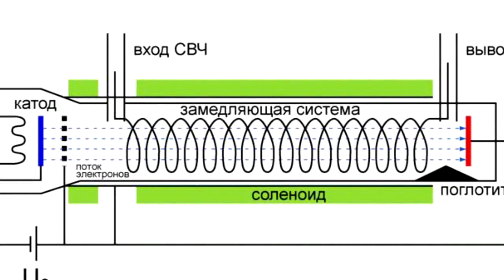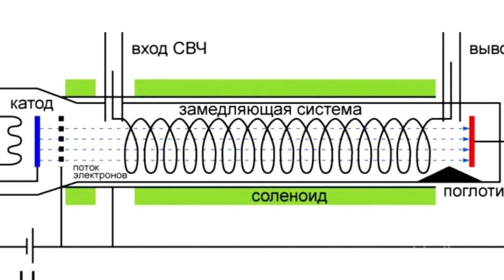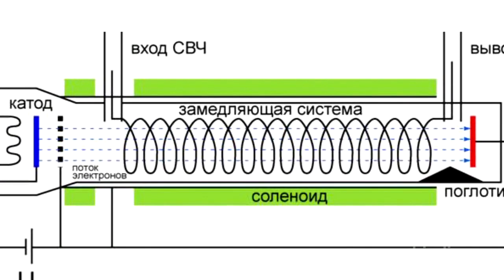Slow-wave structure propagates an electromagnetic wave which interacts with electrons. This system represents a helix between dielectric rods. It has good heat conductivity, as powerful tubes get warm greatly and have to be cooled down.